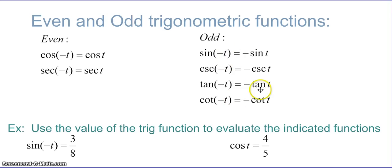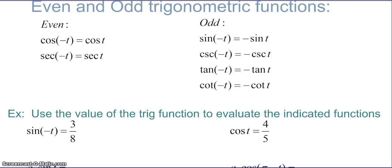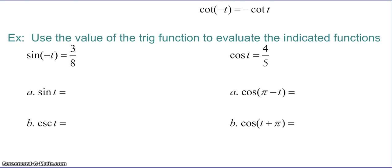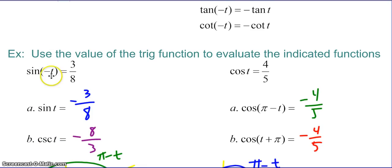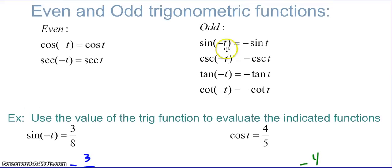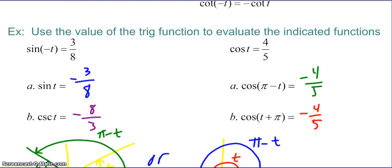Using the value of the trig function, evaluate the indicated functions — pause the video and try to find sine of t, cosecant of t, cosine of (π minus t), and cosine of (t plus π). For sine: if sine of negative t equals 3/8, then sine of t equals negative 3/8, because sine of negative t equals negative sine of t, so negative sine of t equals positive 3/8, meaning sine of t equals negative 3/8. And cosecant of t equals negative 8/3 because it's the reciprocal of sine of t.